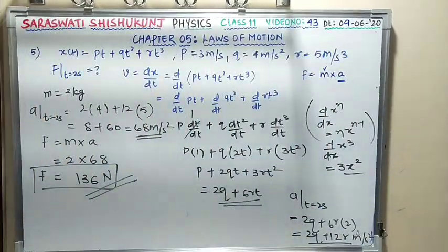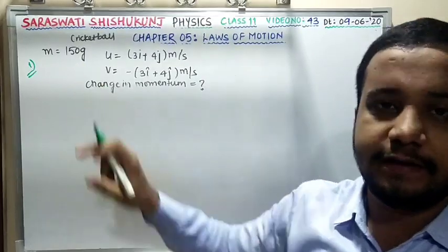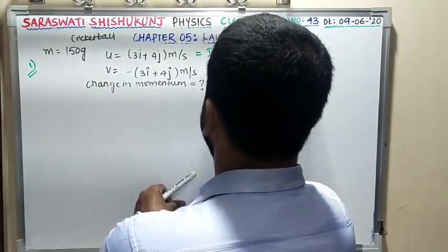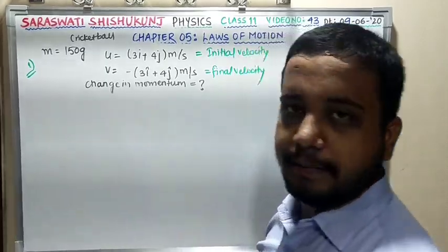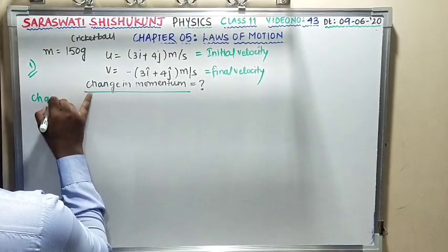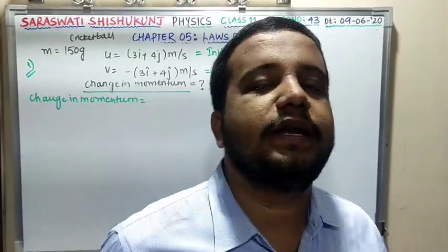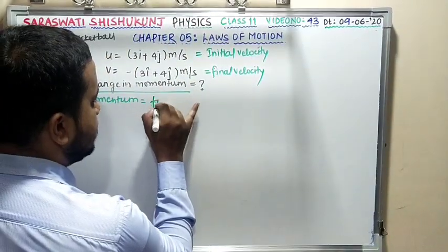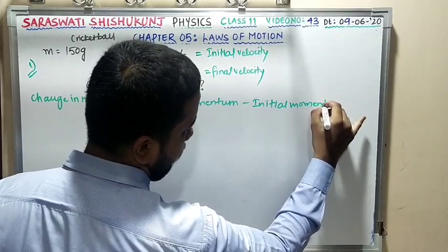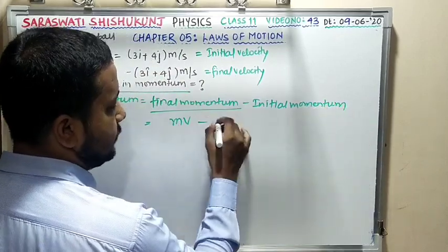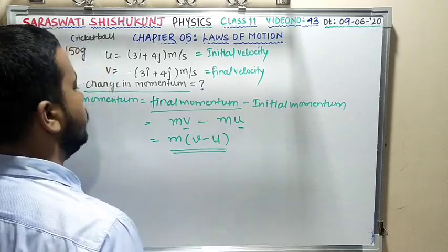Next MCQ: A cricket ball of mass 150 grams has initial velocity U and final velocity V. We need to find the change in momentum. Change in momentum = final momentum − initial momentum = m(V − U). We need to calculate V − U.